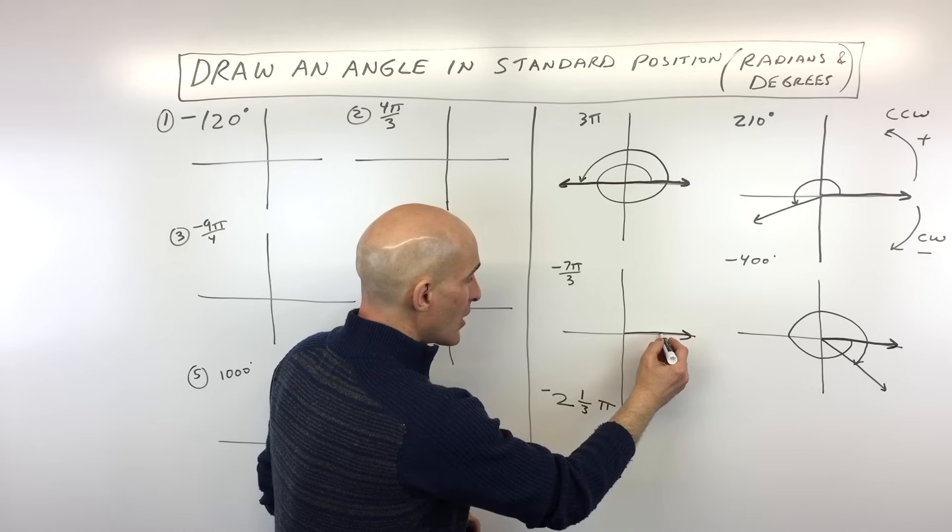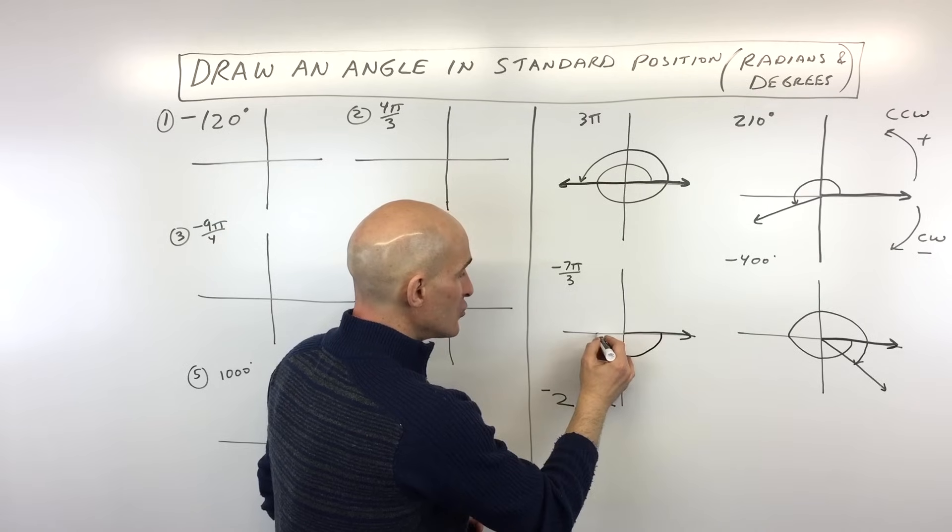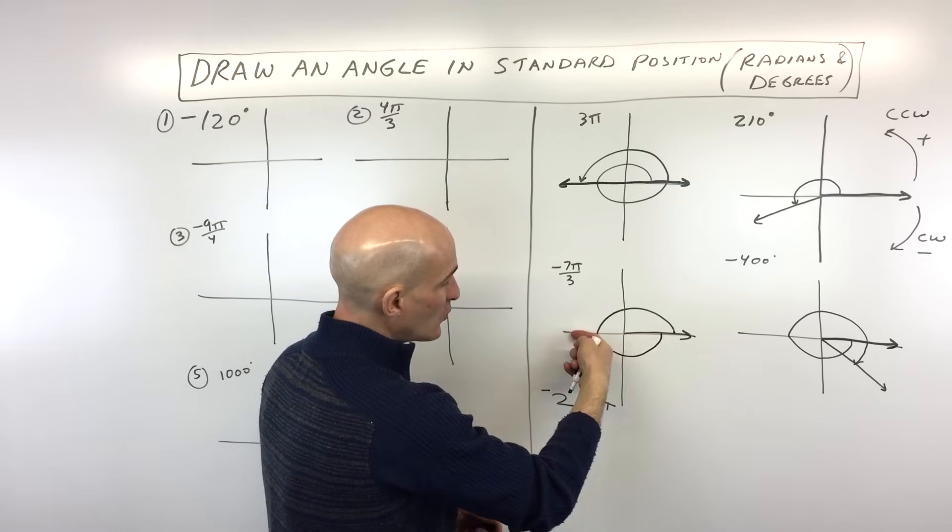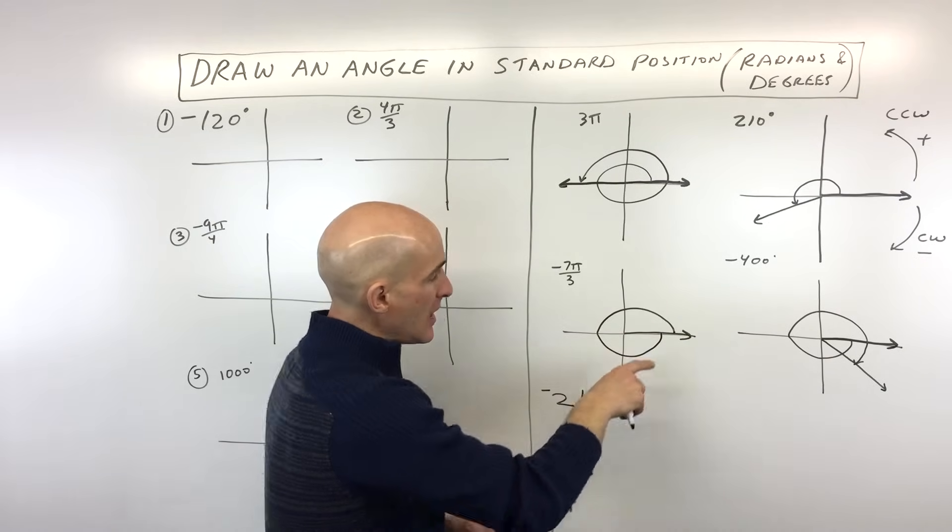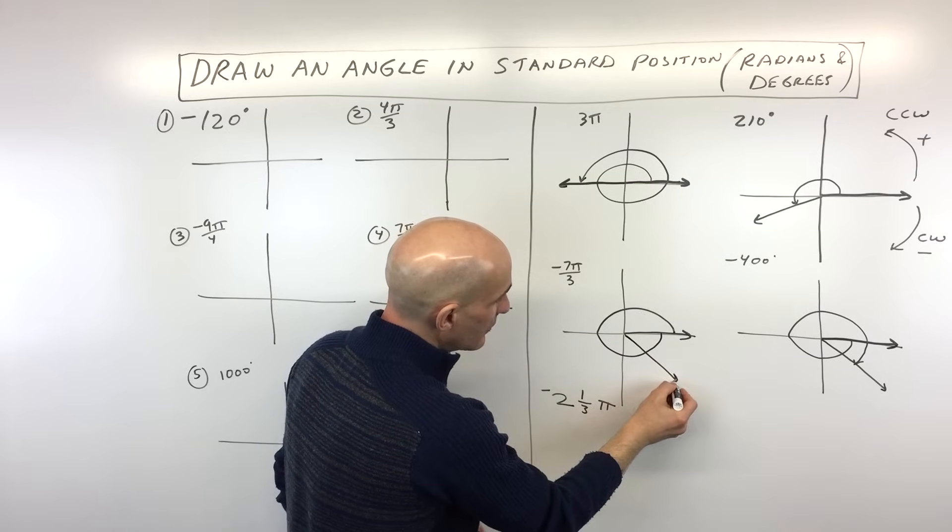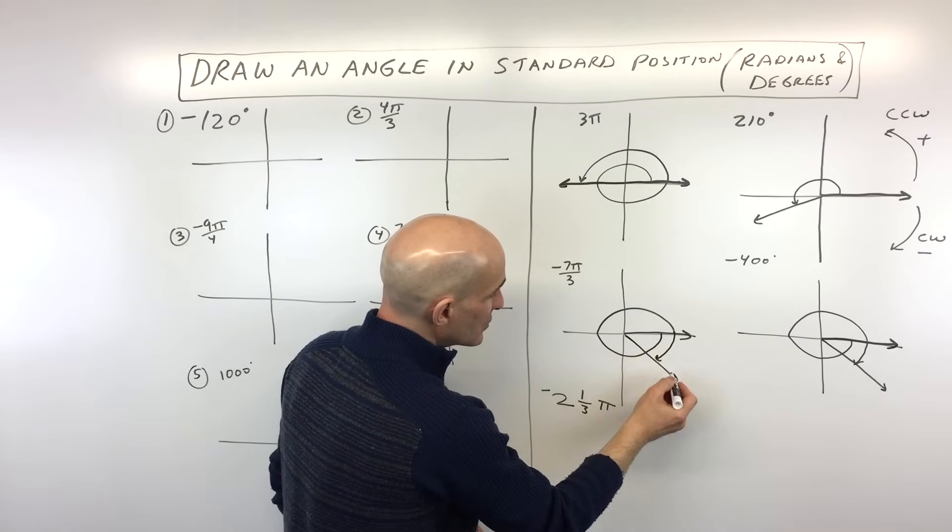So 1 pi, remember, is 180. 2 pi is another 180. That's 360. And then 1 3rd of pi. Now, because pi is 180, that's like a half a revolution, we're going to go 1 3rd of the way. That's going to be about right here. Okay? And so that's going to be where it terminates or ends.